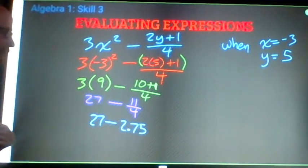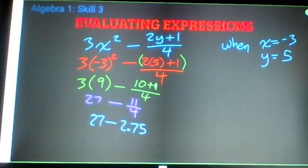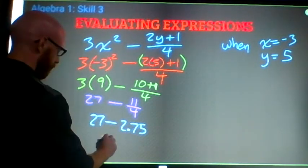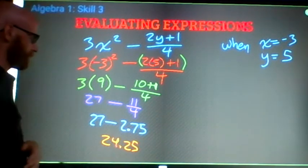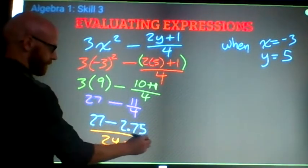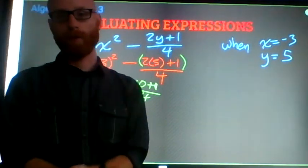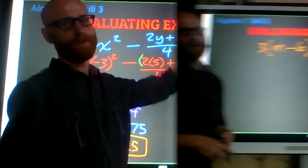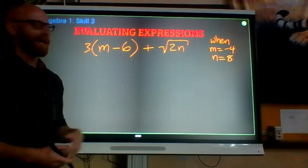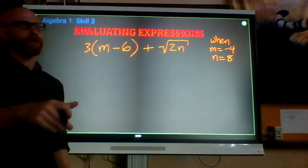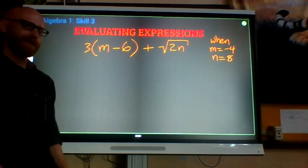And last step. 27 minus 2.75 is 24.25. Final answer. 24.25. So same as doing an order of operations problem. Just the first step one is replace each variable with whatever they tell you to. If you want to try one, see how you're doing before you roll into class. Hit pause. Try this one. Hit pause because I'm going to just roll through and do it. And then when you have finished, unpause, check your answer against mine.